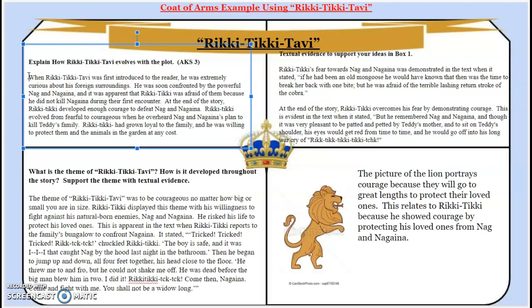I'm hoping that example, which is a really good example, does help you. For box two, you need to include textual evidence to support your answers in box one. So for this example, it states: Rikki-Tikki's fear towards Nag and Nagaina was demonstrated in the text when it stated, 'If he had been an old mongoose, he would have known that then was the time to break her back with one bite, but he was afraid of the terrible lashing return stroke of the cobra.' So it does show that he was fearful. Remember, in box one, it does say that Rikki-Tikki went from fearful to courageous.